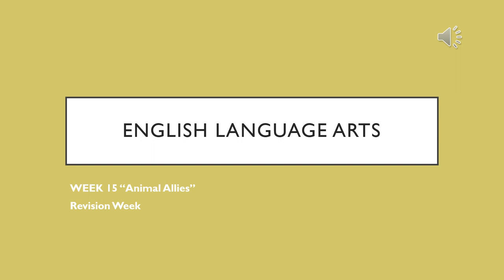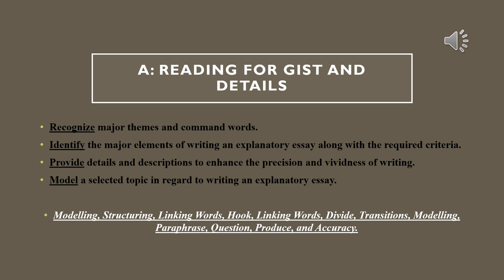Hello everyone, welcome back to our last weekly video regarding the revision. In this video we're going to tackle the skills that are going to be included in the E1 assessment and what criteria are going to be assessed on. In our first skill, reading for details, we're going to recognize and define major and specific themes regarding certain command words, and we're going to identify elements of writing an explanatory essay — that's the type of writing we're dealing with in regard to the required criteria.